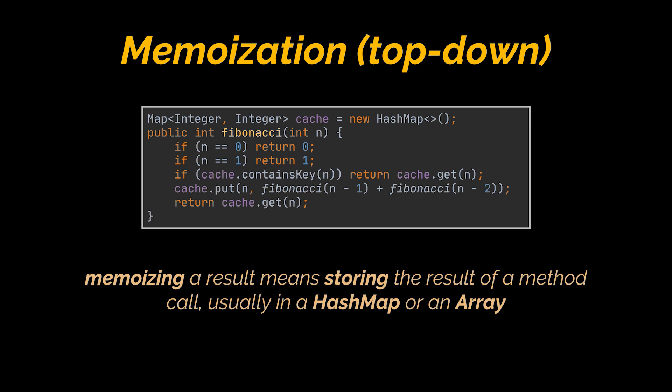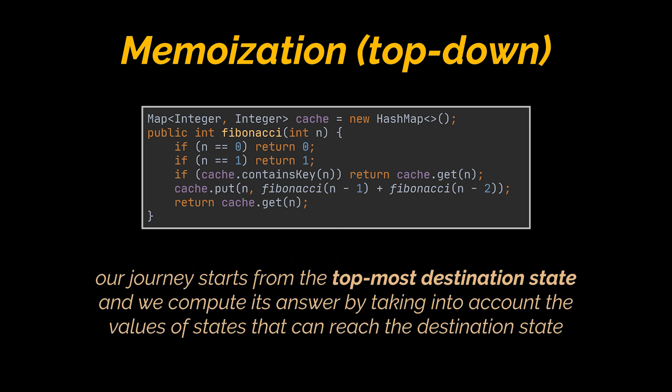So when the same method is invoked again, we can simply return the memoized result instead of recalculating the same value. Our journey starts from the top-most destination state and we compute its answers by taking into account the values of states that can reach it, till we reach the bottom-most base state. In our Fibonacci example, we create a map and add a condition: if the map contains the result we're trying to calculate, return it; if not, calculate it and store it in the map.